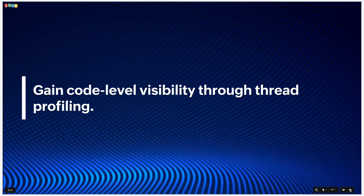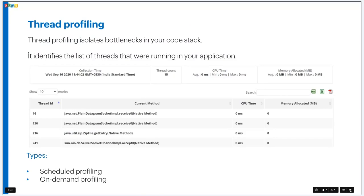Thread profiling gives code-level visibility. It analyzes code performance at a deep level, identifying and isolating bottlenecks in the code stack. Each thread profile lists threads running when the application was profiled. We have two types: scheduled — APM Insight schedules thread profiling twice a day for five minutes — and on-demand, which you can initiate yourself for a duration of 5 to 30 minutes.